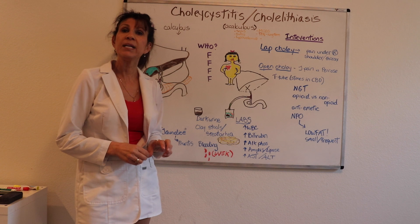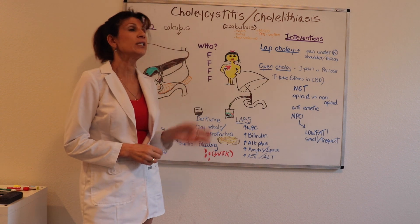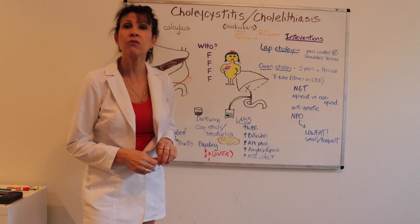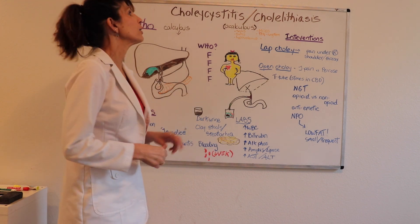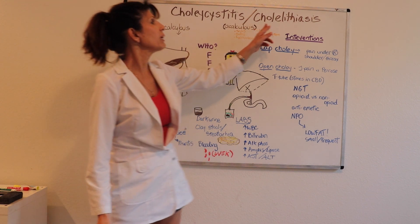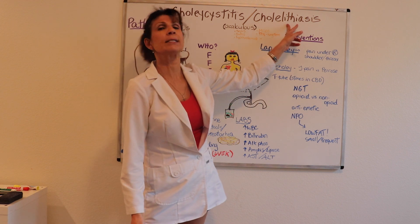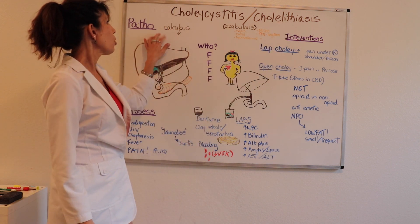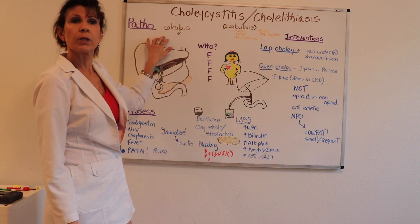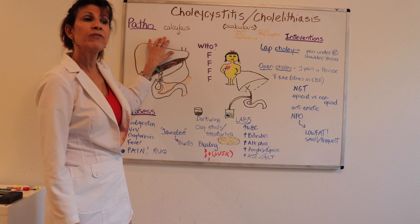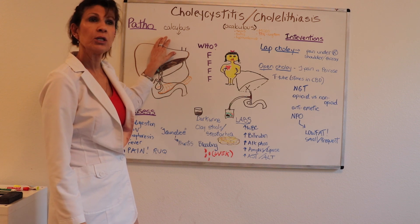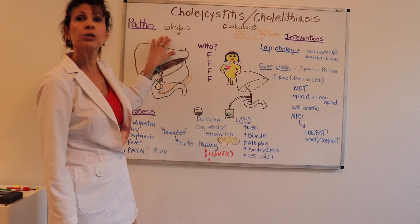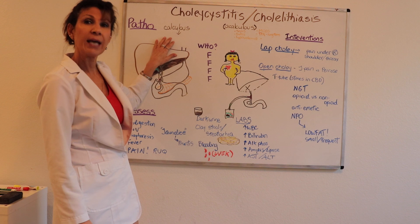This segment covers cholecystitis, or inflammation of the gallbladder. Cholelithiasis means gallstone formation, and some inflammation of the gallbladder is secondary to gallstone formation — that is called the calculous type.